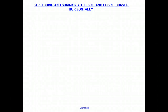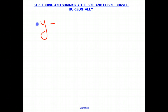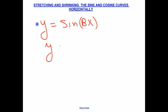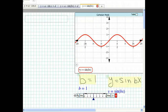Today we'll be talking about how to stretch and shrink the sine and cosine curves horizontally. The equations we'll be using are Y equals the sine of BX or the cosine of BX, where we change the value of B. Here we have a normal sine curve with B equal to 1, so it's just Y equals the sine of X, and we're going to change the value of B.